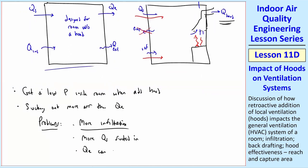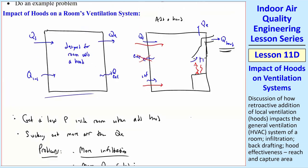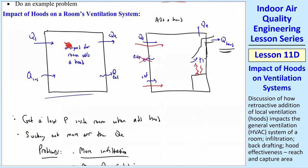QE can go backwards. Normally we have supply and exhaust, but you're sucking out all this volume flow rate, so QE can actually go backwards and start coming into the room. Why is that bad? You're taking exhaust air from other rooms that should be going outside or being filtered and bringing that in. That's not good.